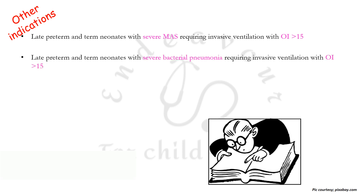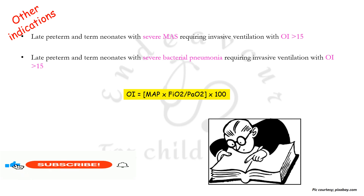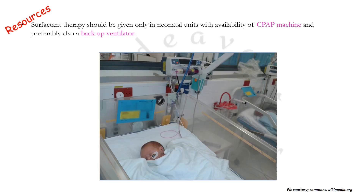Late preterm and term neonates with severe bacterial pneumonia requiring invasive ventilation with an oxygenation index more than 15 are also an indication. The oxygenation index is calculated as: mean airway pressure × FiO₂ ÷ PaO₂ × 100, where MAP is the mean airway pressure — not mean arterial pressure, which is a common point of confusion. Surfactant should be given in neonatal units with availability of a CPAP machine and preferably also a backup ventilator.